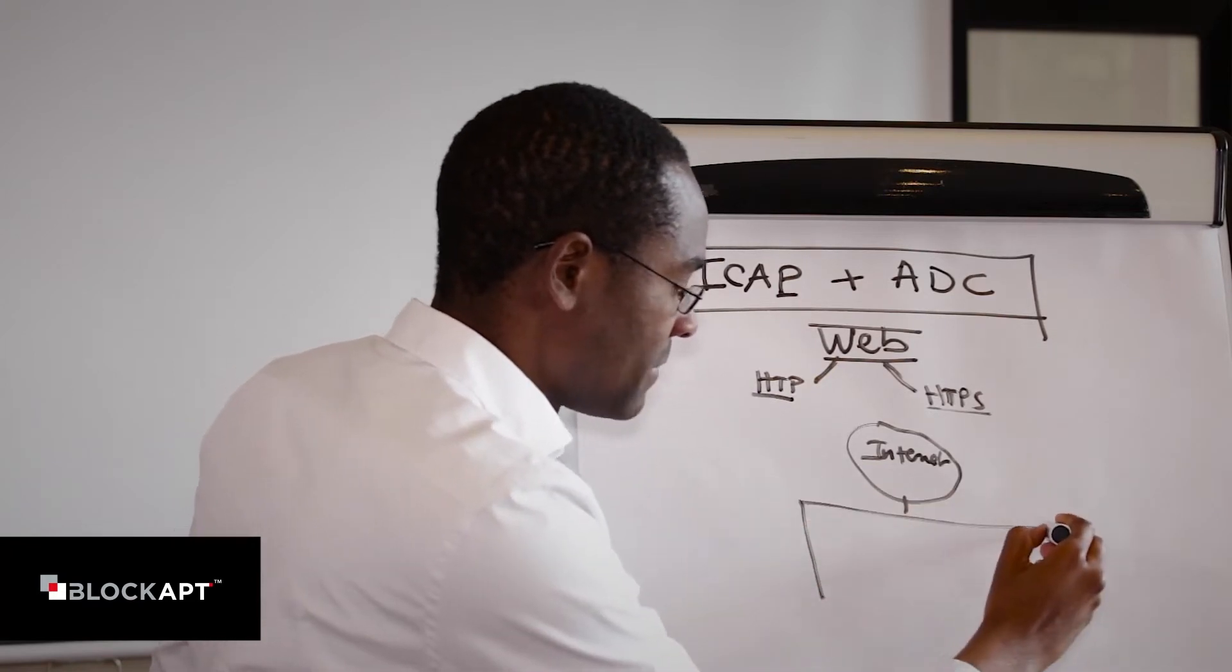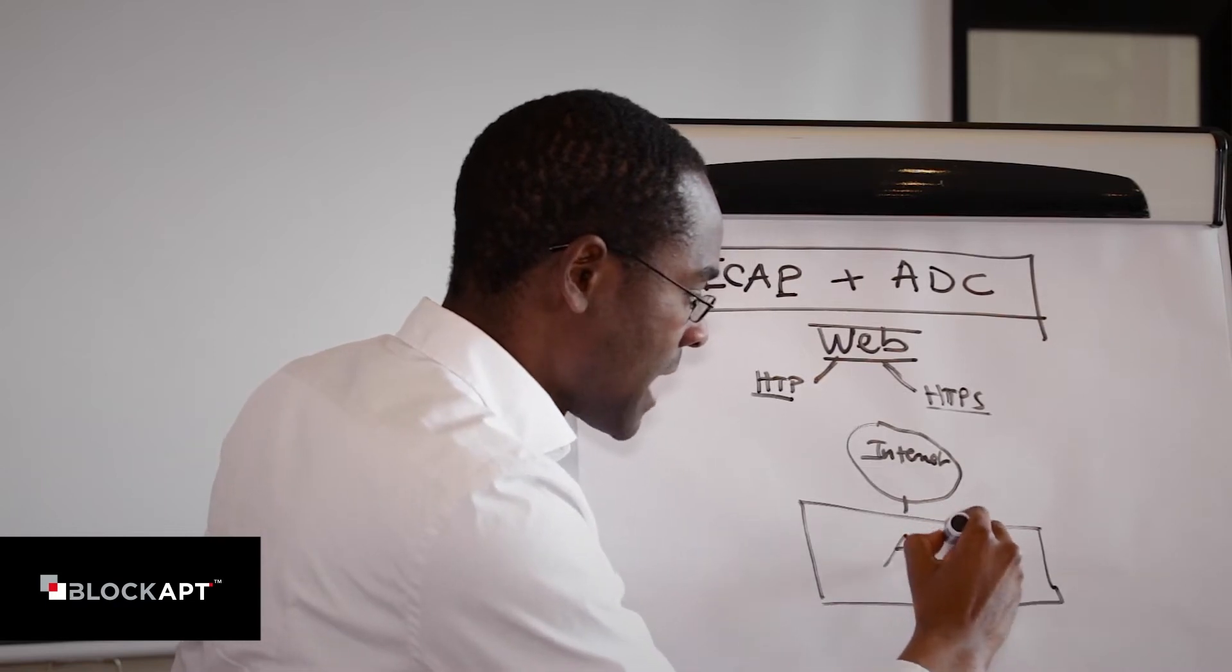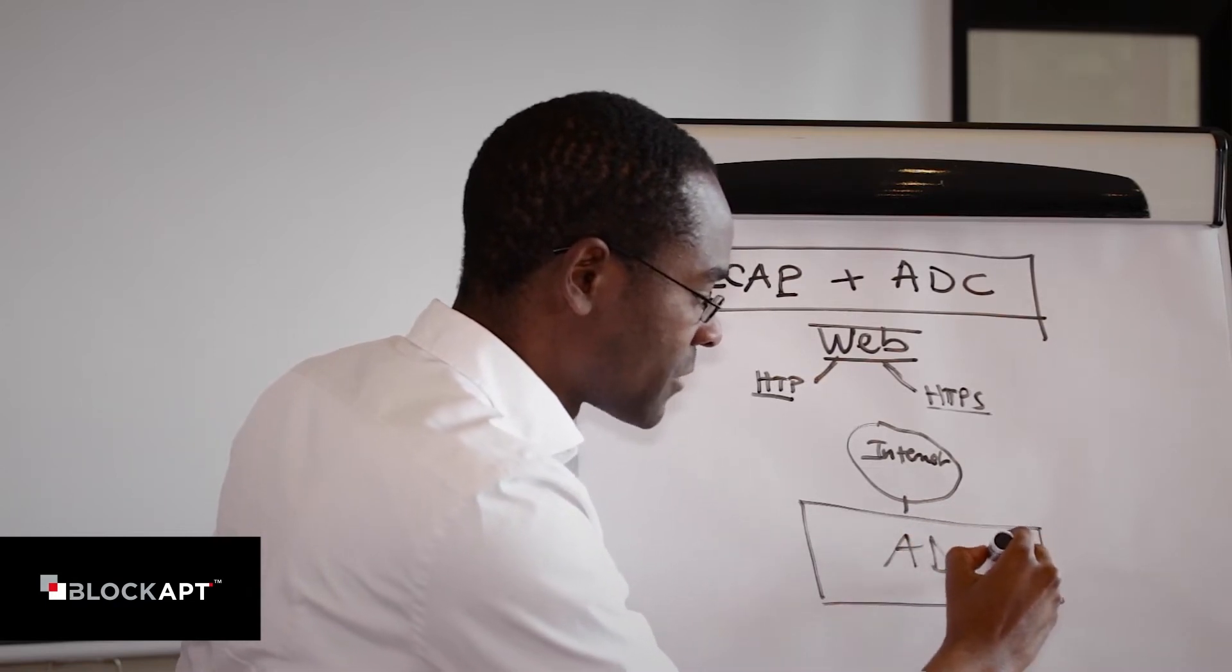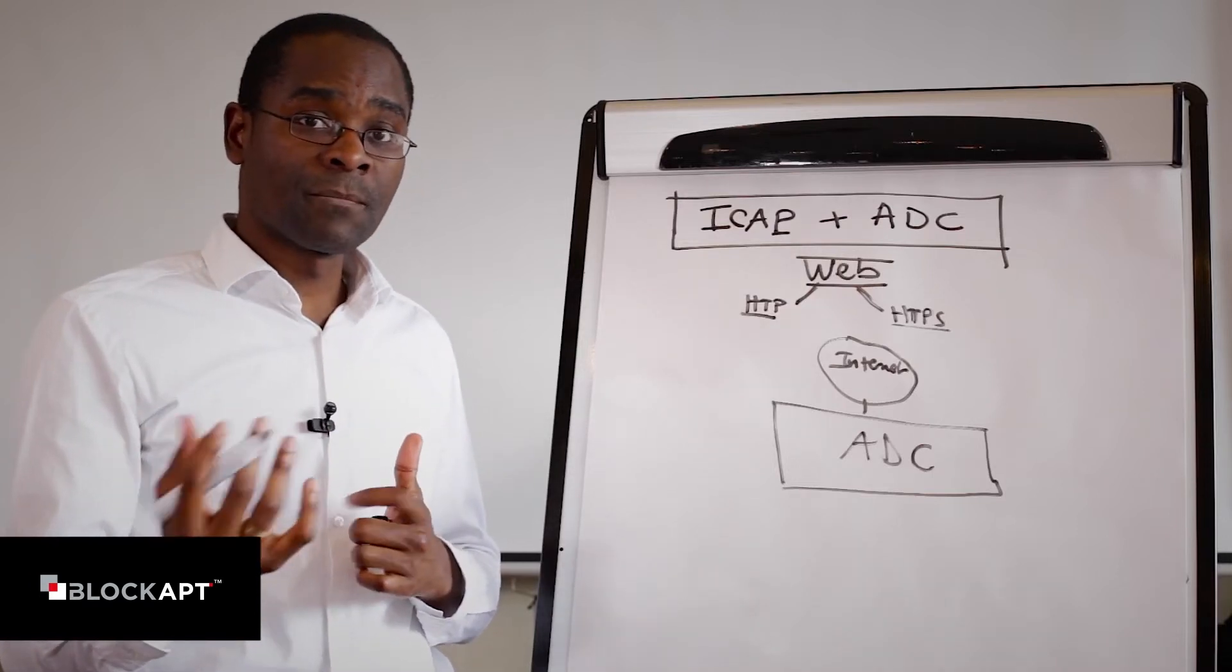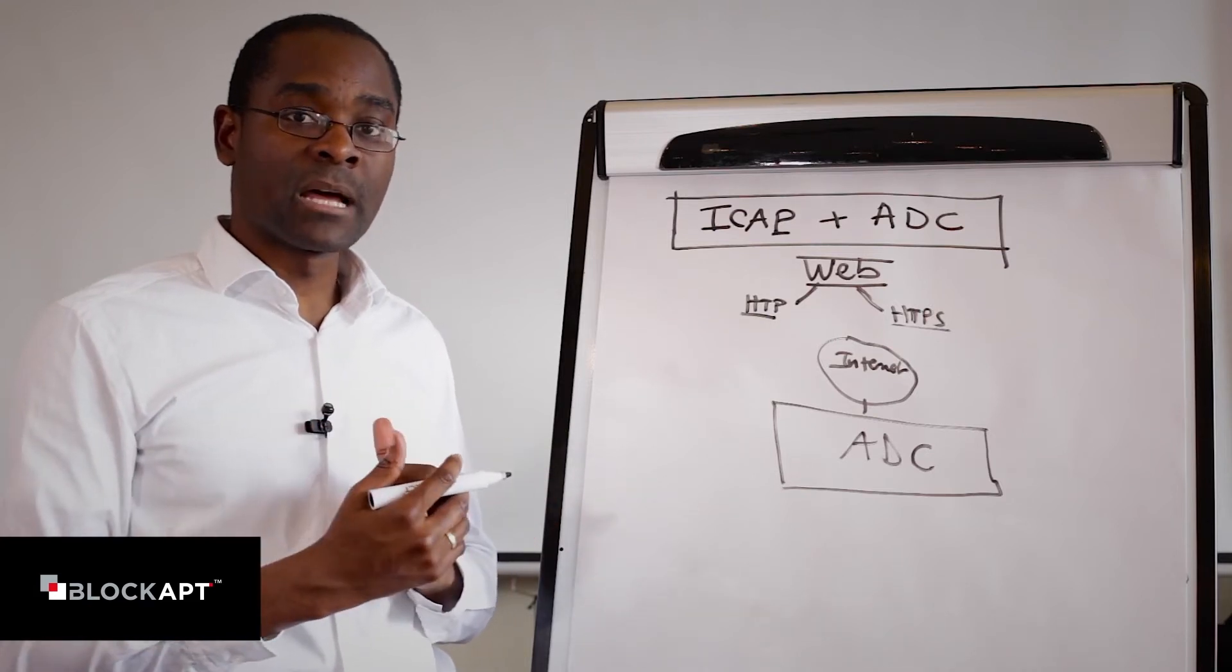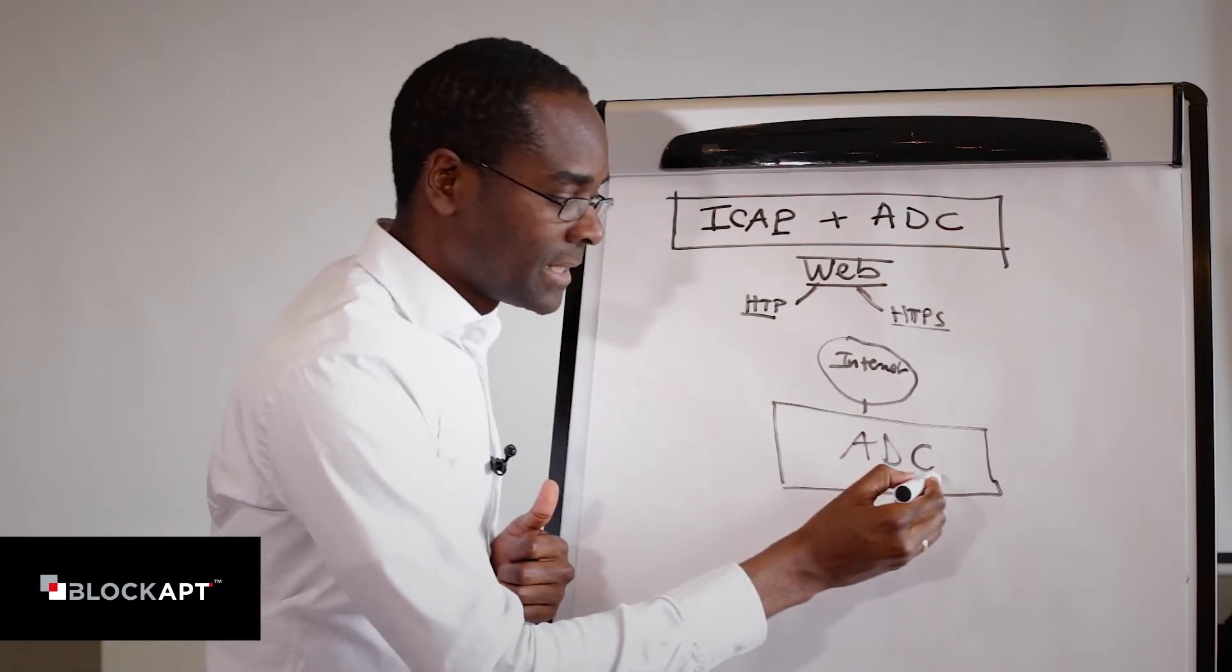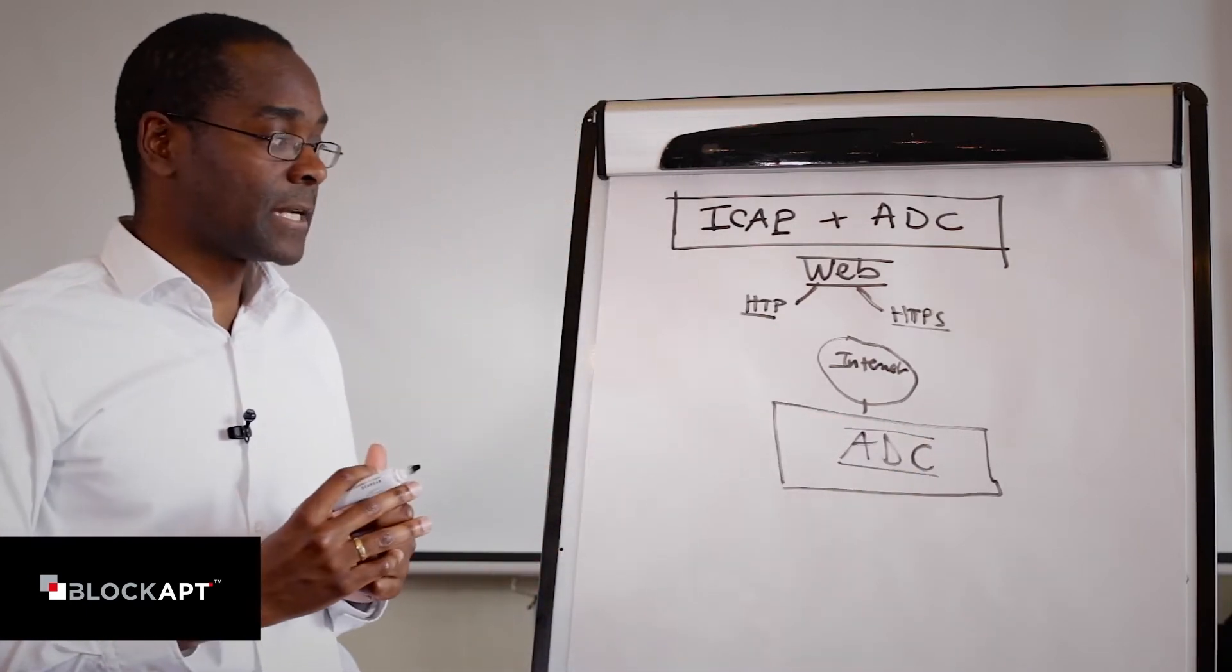If I just use a very simplistic example here, where the ADC is providing our application delivery control. So more familiar with terms like load balancing, application security, and also content switching or content redirection. So that's essentially what the ADC is providing us. Obviously the ADC could do a lot more, but we're going to stick to that.